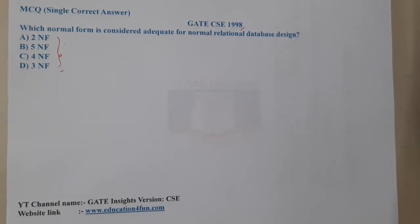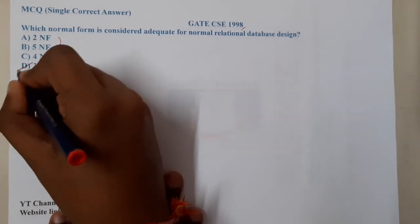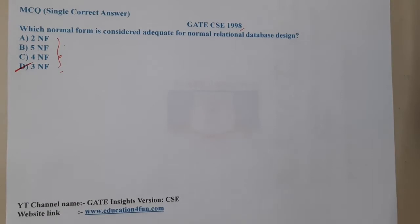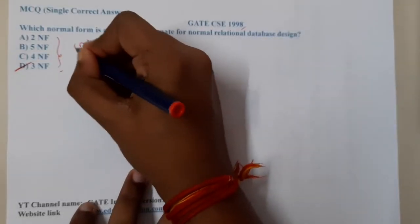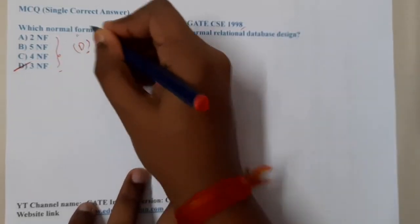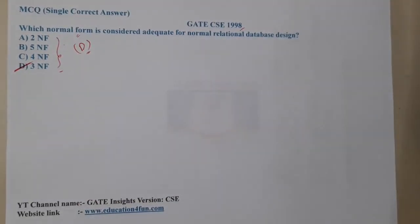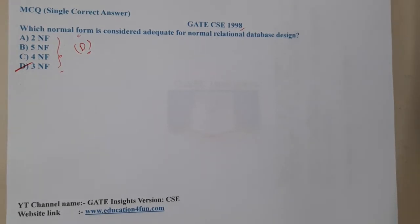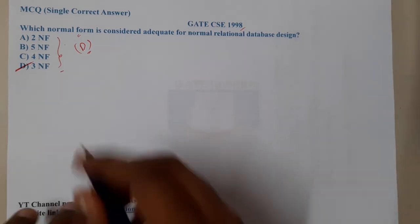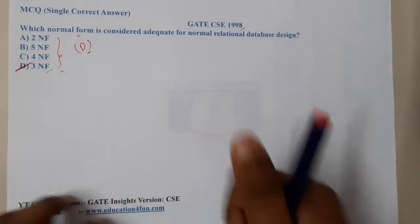This is a direct theoretical question. 3NF is the business or industry standard, so option D is the correct answer. As I clearly mentioned during our theoretical discussions, 3NF is the standard. If you are running a company and your database is already in 3NF, it is a good database.